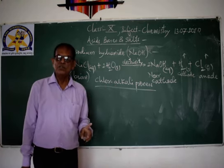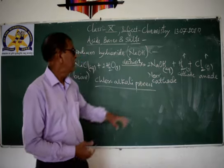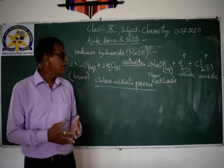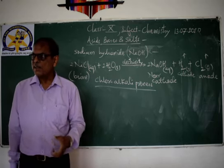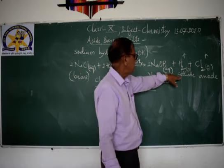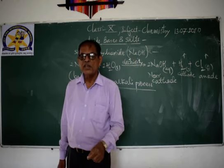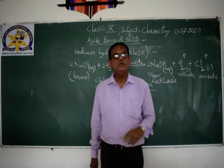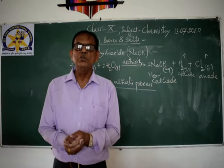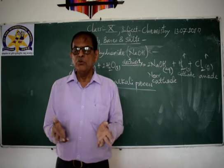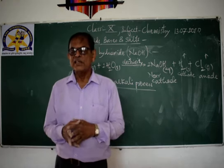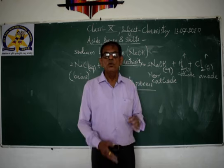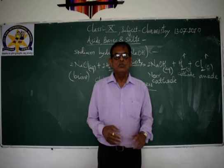Sodium hydroxide is generally obtained by passing electricity through the aqueous solution of sodium chloride — this is the chlor-alkali process. It is called the chlor-alkali process because chlorine and alkali (sodium hydroxide) are both produced. The aqueous solution of NaCl is called brine. By passing electric current through brine, we get sodium hydroxide near the cathode, hydrogen gas at the cathode, and chlorine gas at the anode. Hydrogen is used as fuel and for manufacture of ammonia for fertilizers. Chlorine is used in swimming pools to kill germs, and for making PVC.